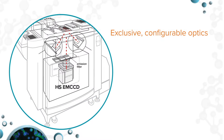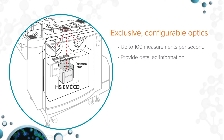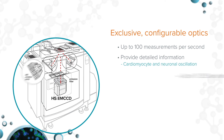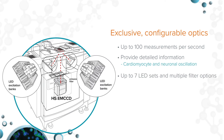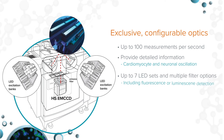A newly enhanced HS-EMCCD camera option allows for up to 100 measurements per second and provides detailed information about cardiomyocyte and/or neuronal oscillation. Up to 7 LED sets and multiple filter options, including fluorescence or luminescence detection, are available.